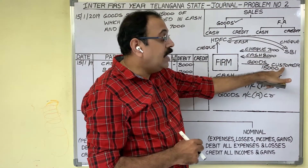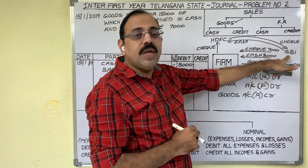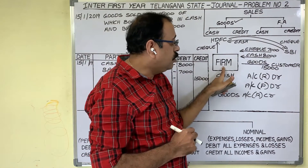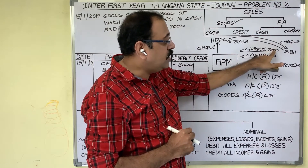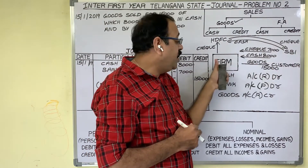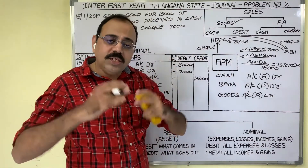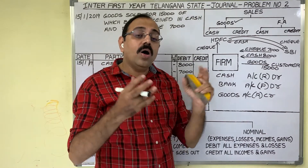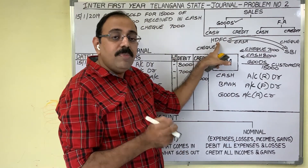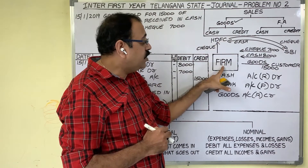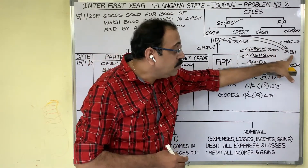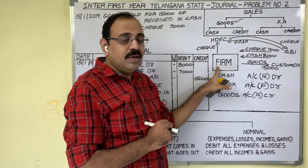Assume the customer is maintaining his bank account in SBI. The actual procedure is: the firm should go to SBI, present the customer's cheque worth 7,000 in SBI, and the firm should encash it. But when we are doing business, daily so many cheques we receive — can we go to all those banks? Impossible. Then what we do: we also maintain one bank. We maintain a current account in bank. Assume that our firm is maintaining a current account in HDFC. Then instead of going to the customer's bank, we deposited it in our own account.